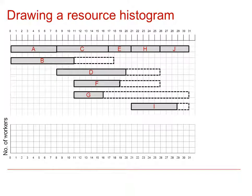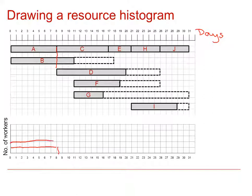This is the same Gantt diagram we had earlier, also known as a cascade chart, and we're going to use this cascade chart to draw our resource histogram. Looking along the axes — we're going to call this the number of days — we can see that from 0 to 8, so for the first 8 days, we only require 2 workers. So on our diagram we can draw in both A and B up to 8, and it's really useful to label your blocks or bars as you go along.